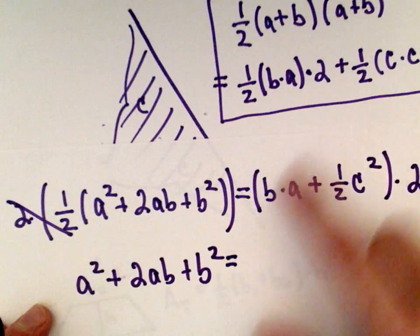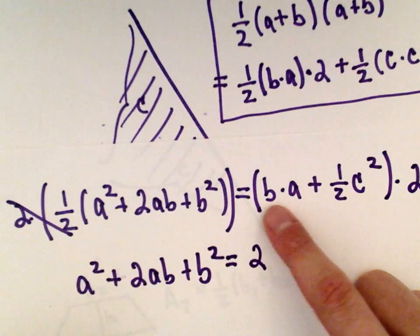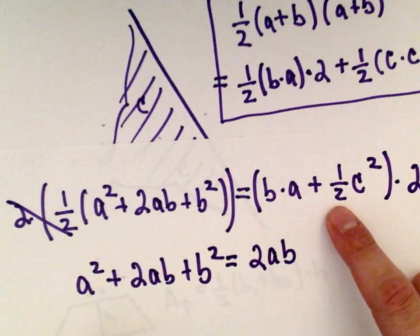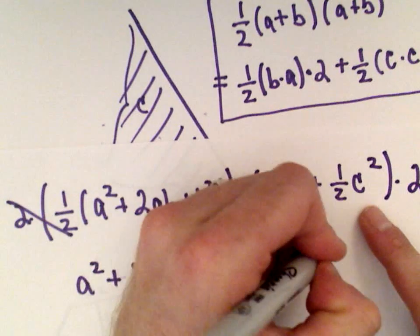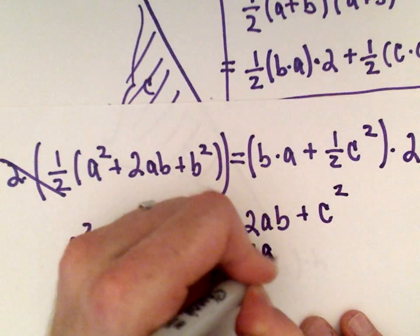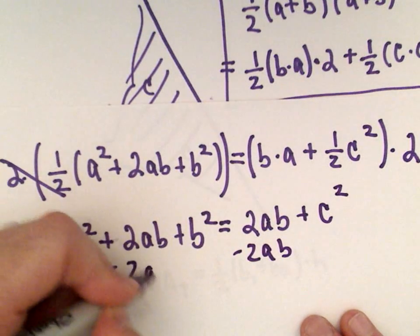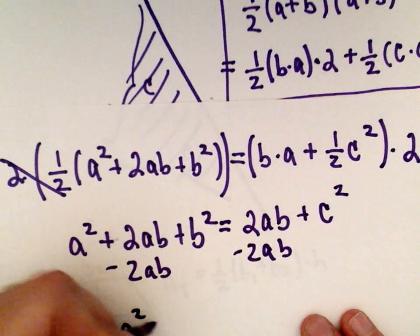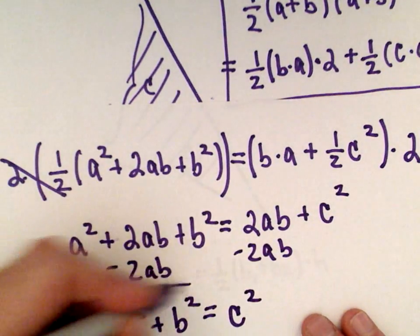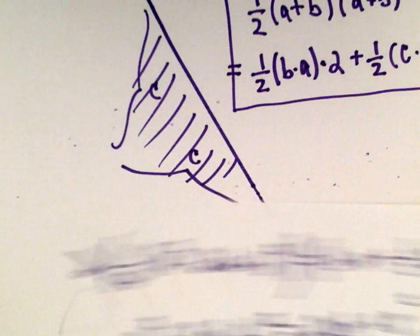On the right side, you'd have to distribute, so you would have 2 times B times A. I'm going to rewrite that as A times B. And then 2 times a half, which is just 1, times C squared. Now if we subtract this 2AB from both sides, we get A squared plus B squared equals C squared, which is the desired result.